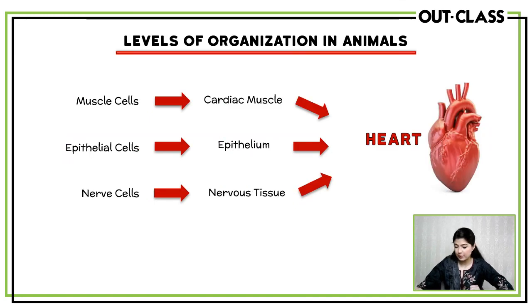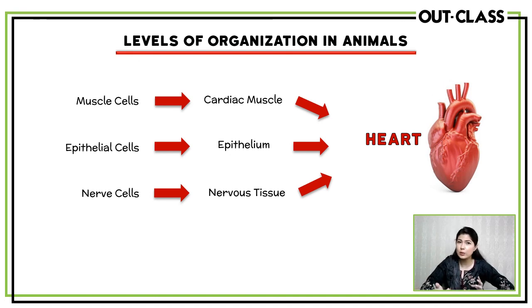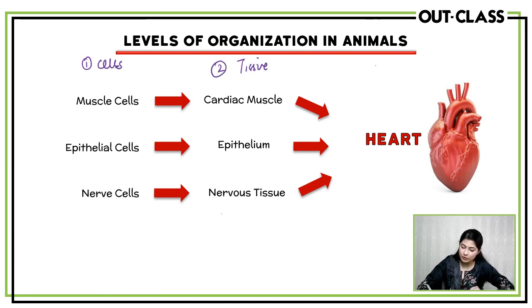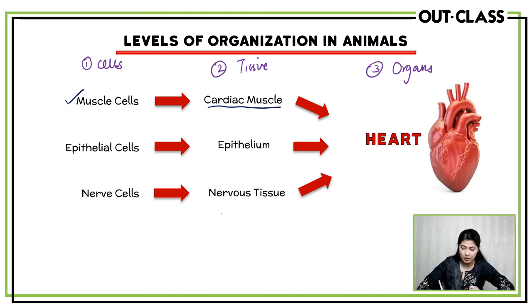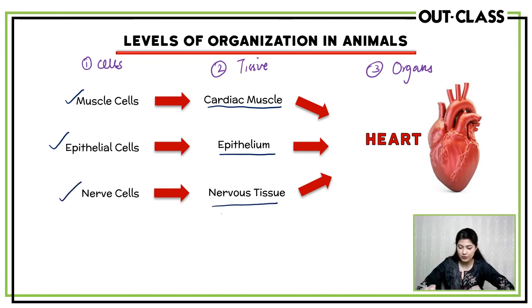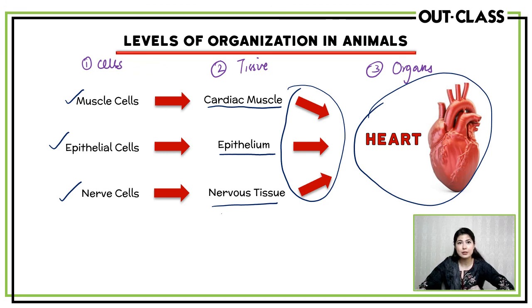The levels of organization in animals are absolutely the same as plants: cells, then tissue, then organs. For example, taking the heart in humans — you have muscle cells which form the cardiac muscle tissue, epithelial cells which form the epithelium, and nerve cells or neurons which form the nervous tissue. When these three tissues combine and work together to perform a specific function, you get the organ which is the heart.